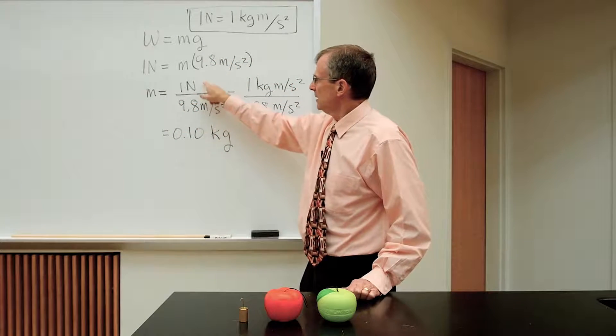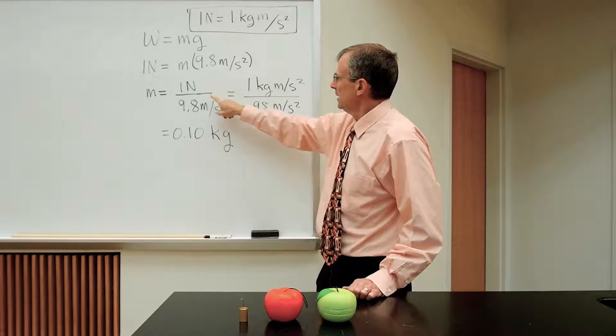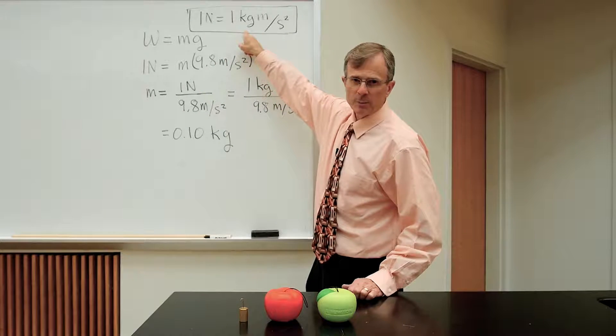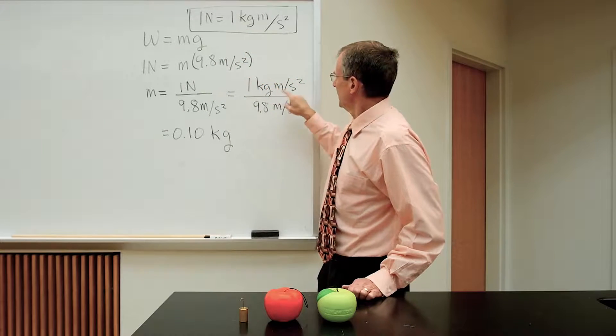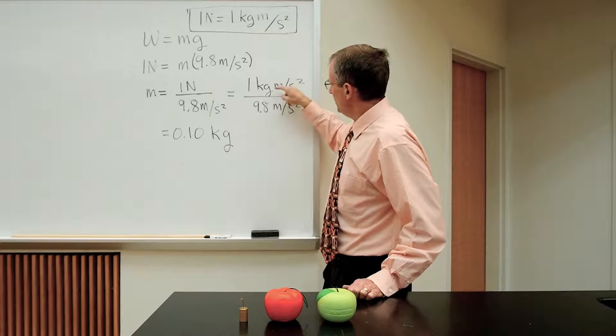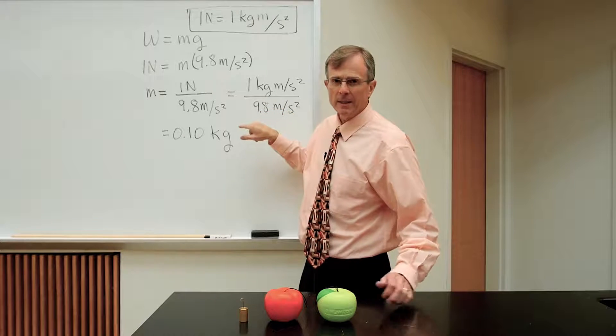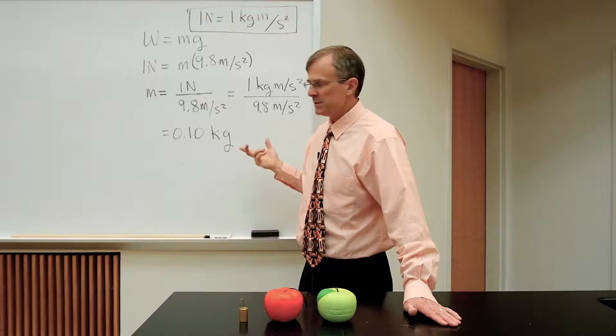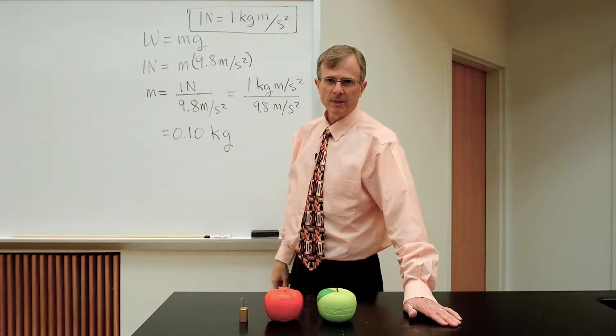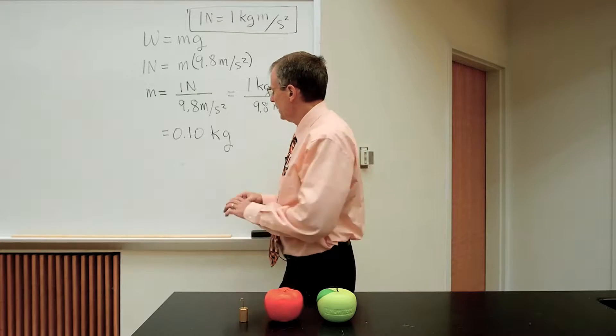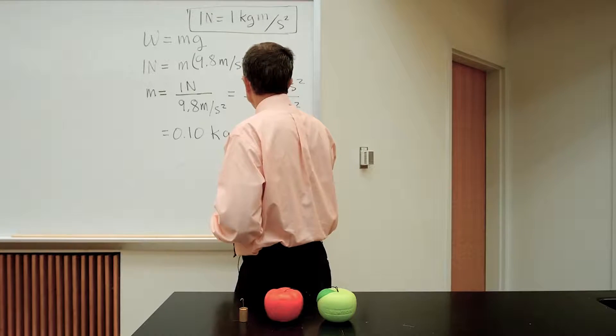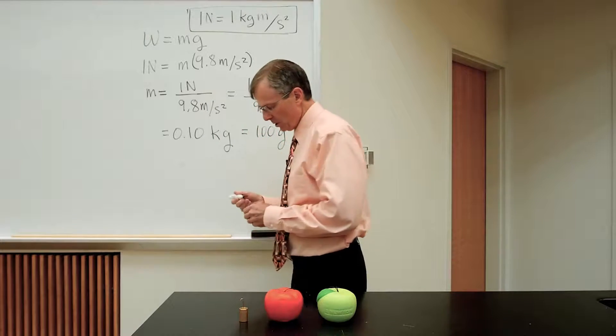Solving for the mass, we have one newton over 9.8, and newton is a kilogram meter per second squared. So we plug that in for newton, the meters per second squared cancel, and we end up with just 1 over 9.8 kilograms, which is about one-tenth of a kilogram, or about 100 grams.